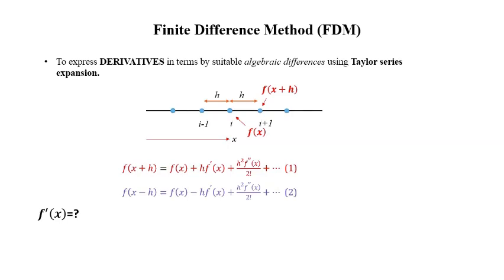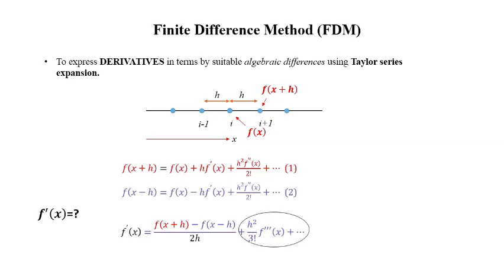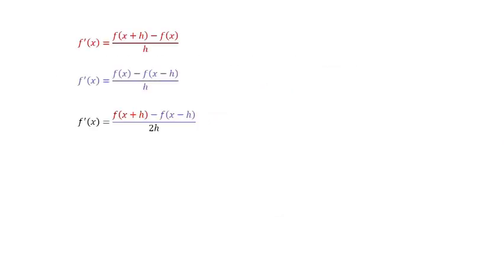Is there any other way to express f'(x)? By subtracting equation 2 from equation 1, we get: f'(x) = [f(x+h) − f(x−h)] / 2h + h²/3! · f'''(x) + higher order terms. Considering only the first term and neglecting higher order terms, the resultant expression has a truncation error of order h².